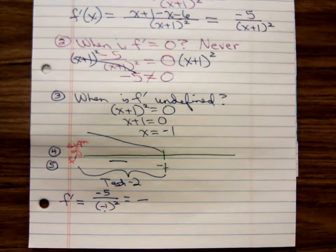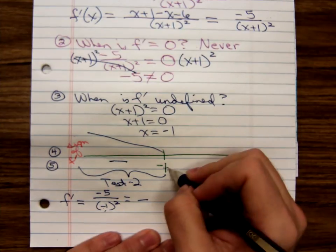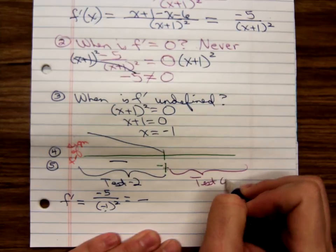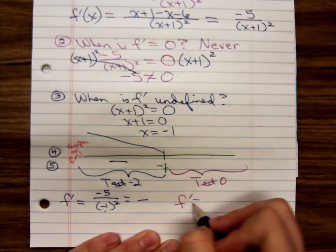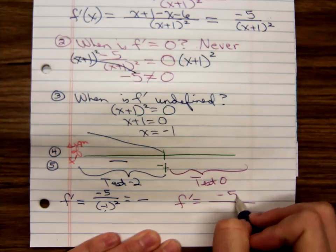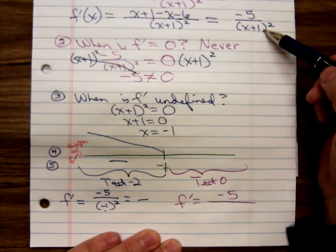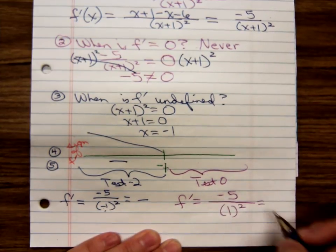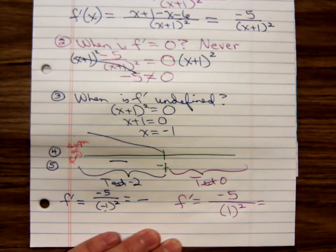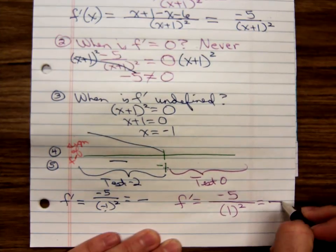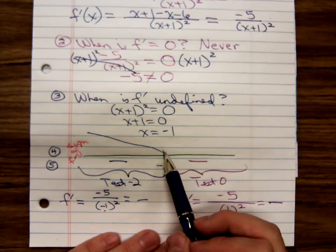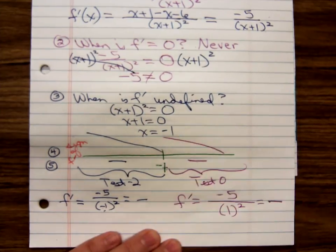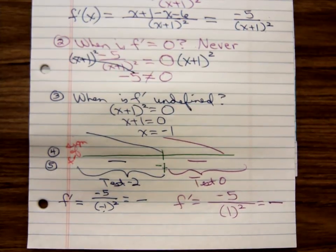So when we move to the other side of negative 1, the function was also decreasing. It doesn't always have to alternate signs as we've just now seen.